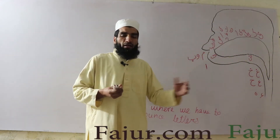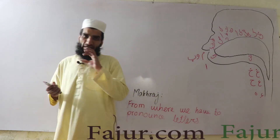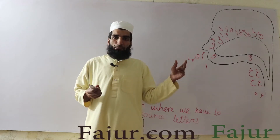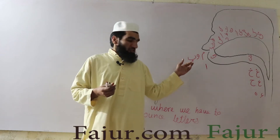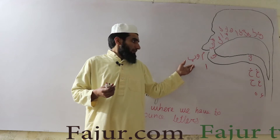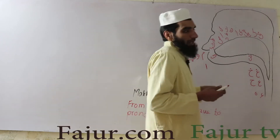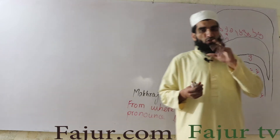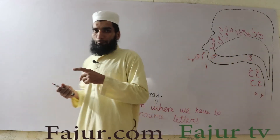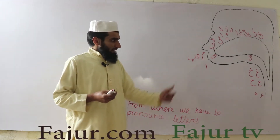For example, Ba is pronounced when we join our lips — like Ba. So the lips joining together is its Makharaj, because that is the place from where Ba is pronounced.